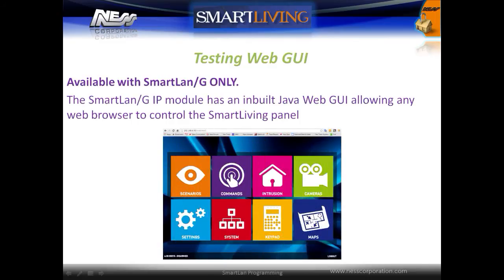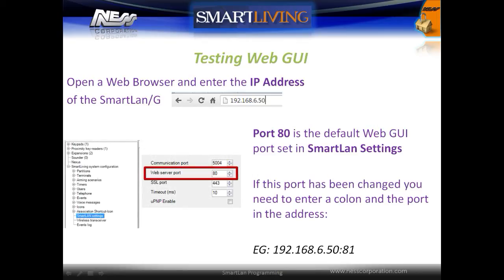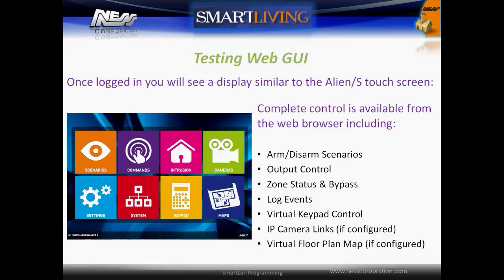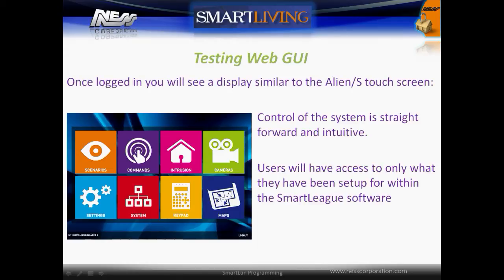The Smart LAN G module has an inbuilt Java web GUI allowing any web browser to control the Smart Living panel — this is not available on the Smart LAN S module. To test connection to the panel, open a web browser and enter the IP address of the Smart LAN G module. If the web port has been changed from 80, this needs to be added to the end of the address. The web GUI page will be displayed asking for login details — the default username is admin, password is pass, and user code is 0001. Once logged in, you will see a display similar to the ALIEN S touch screen with complete control of the system available. A user will only have access to what they have been programmed for within the Smart League software.